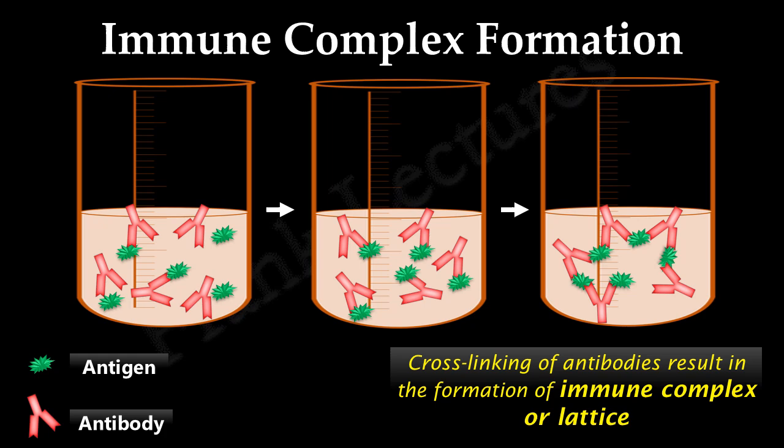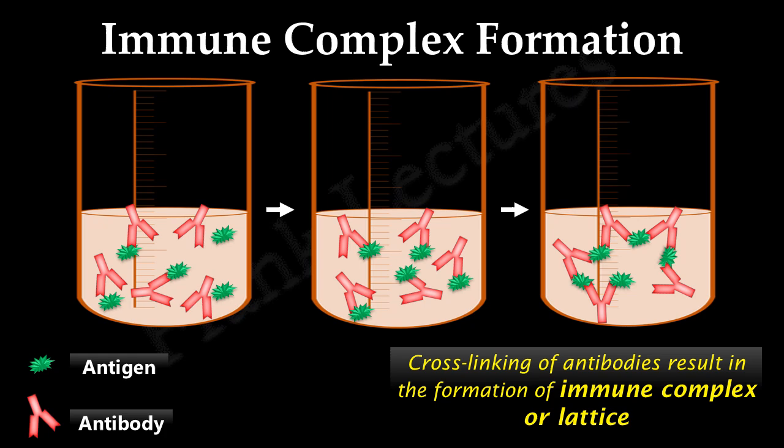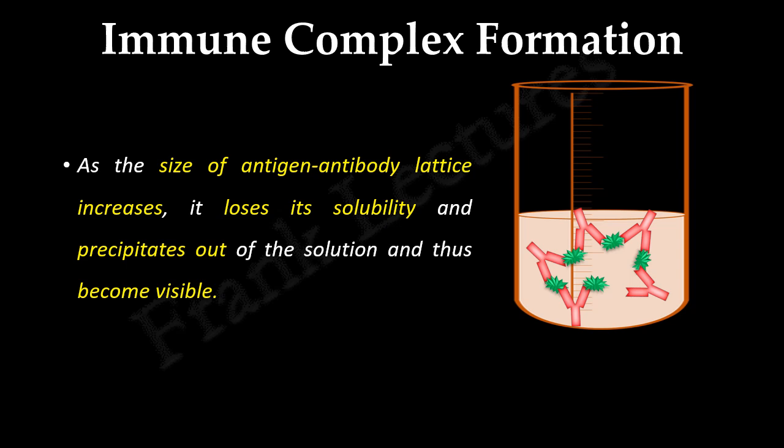More the antigen and antibody molecules become cross-linked, they form lattices large enough to precipitate out of solution and become visible. As the size of antigen-antibody lattice increases, it loses its solubility and precipitates out of the solution, and thus become visible.